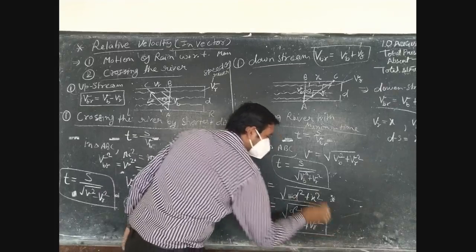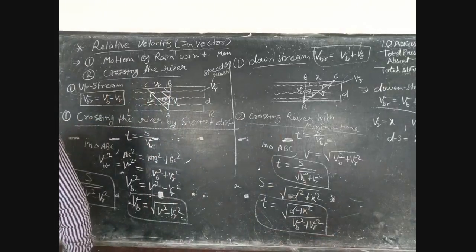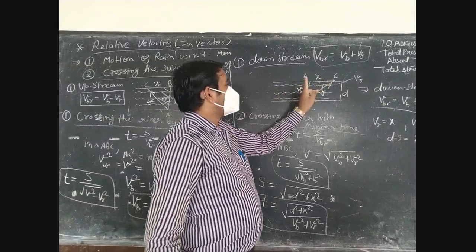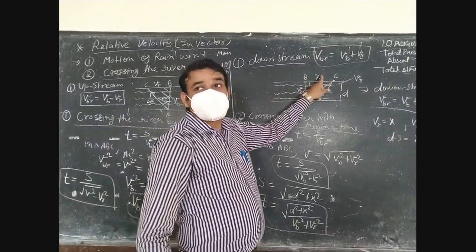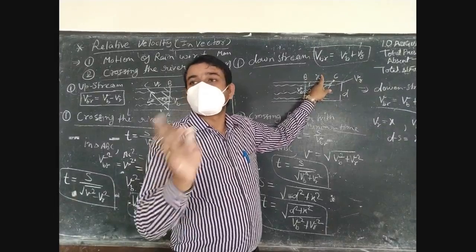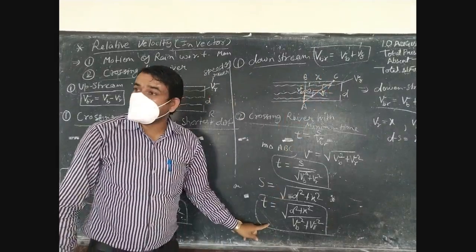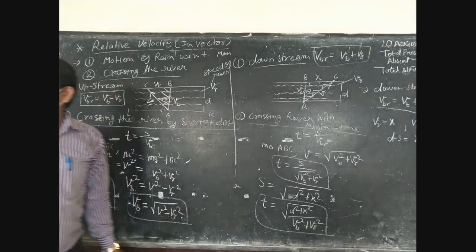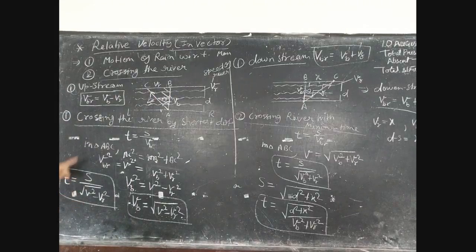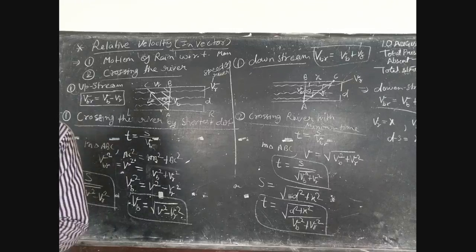This is the complete formula. Displacement X is many times asked in questions. If you need to project by minimum time, use the minimum time formula. If you need to calculate the width of the river, follow the shortest distance concept. Thank you.